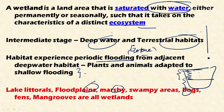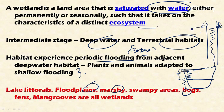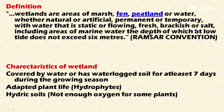Floodplains are the areas lying adjacent to the river channel, beyond the natural levee — that is, the elevated portion of the river bank. The area beyond the natural levee is the floodplain, and this is also considered a wetland. The definition given by the Ramsar Convention is important.